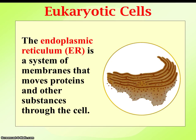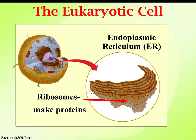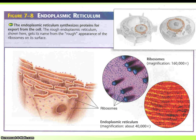Another organelle that works with the nucleus is the endoplasmic reticulum. There are two types: the rough ER, which has ribosomes embedded in it, and the smooth ER. The rough ER has ribosomes there to make proteins, and those proteins are then transported throughout the cell by the ER. The rough ER is connected to the nucleus, so once it gets information from the nucleus on what types of proteins to make through the ribosomes, it can take those proteins and transport them.